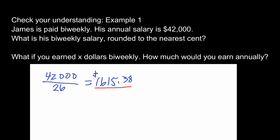The second part asks us to do this algebraically. If you earn X dollars bi-weekly, how much would you earn annually? If we know we're earning X dollars bi-weekly, we multiply that by the 26 paychecks per year. So our answer is 26X.